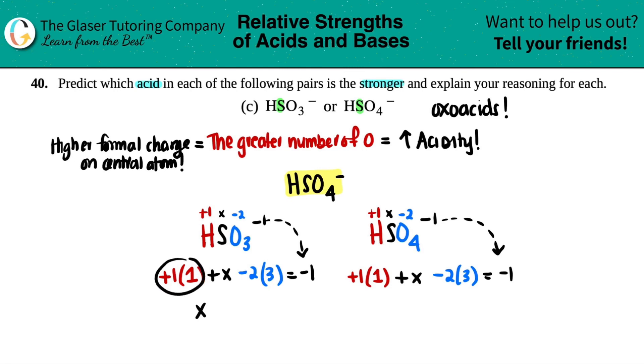negative six plus one. Yeah, negative six. That's a negative five. So we have negative five equals negative one. So just move the negative five. So plus five and plus five. So we get X equals a plus four charge for this sulfur. So we have a plus four.